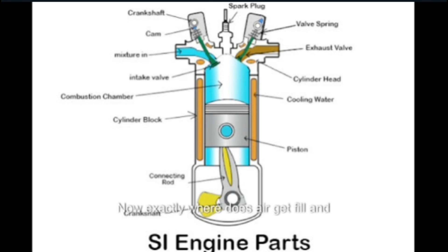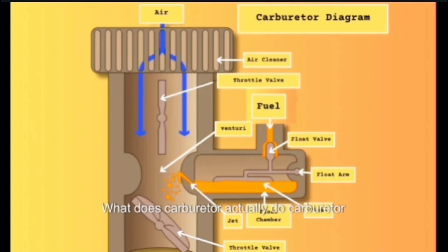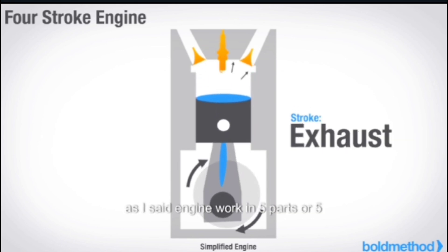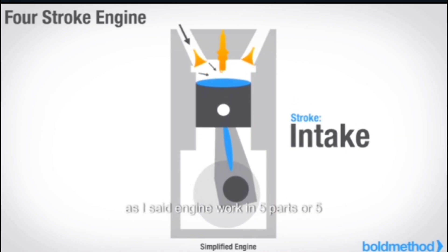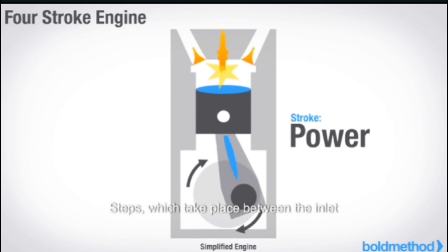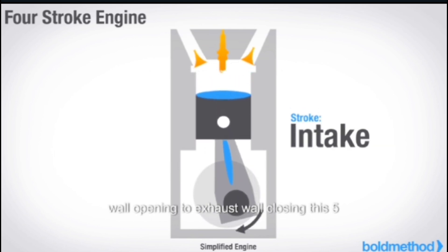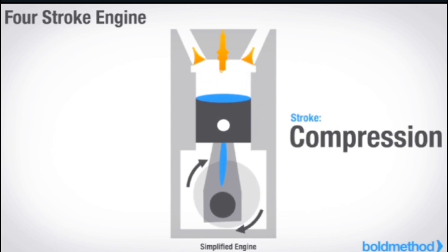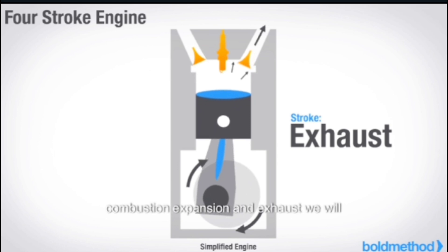Now, exactly where does air get filled and from where is it discarded? The air gets filled in the engine cylinder, which comes from the carburetor. What does the carburetor actually do? The carburetor filters the air and creates a mixture of fuel and air in the proper proportion so as to have proper combustion. As I said, the engine works in five parts or five steps, which take place between the inlet valve opening to the exhaust valve. These five steps are: suction, compression, combustion, expansion, and exhaust.